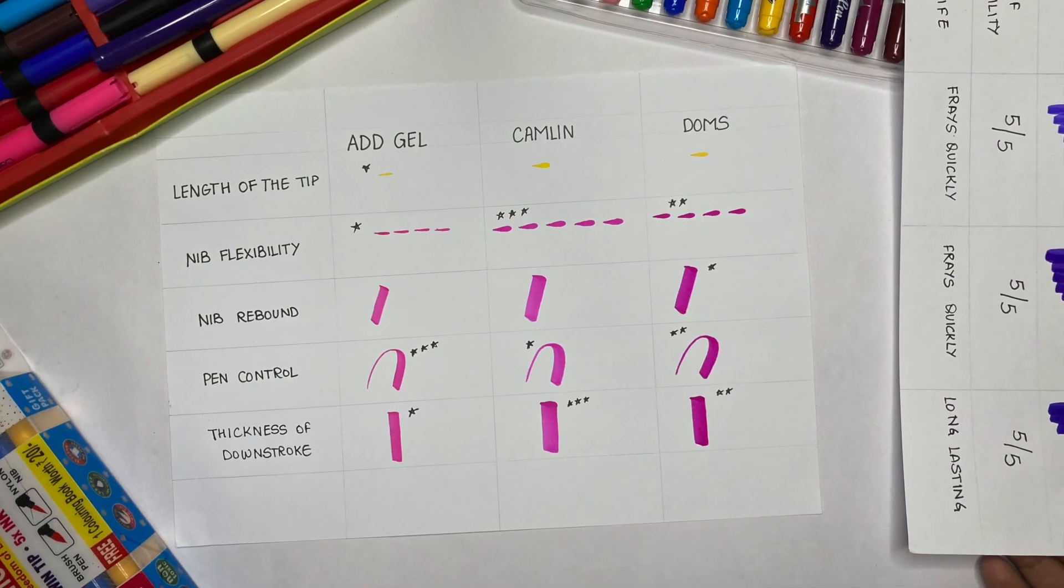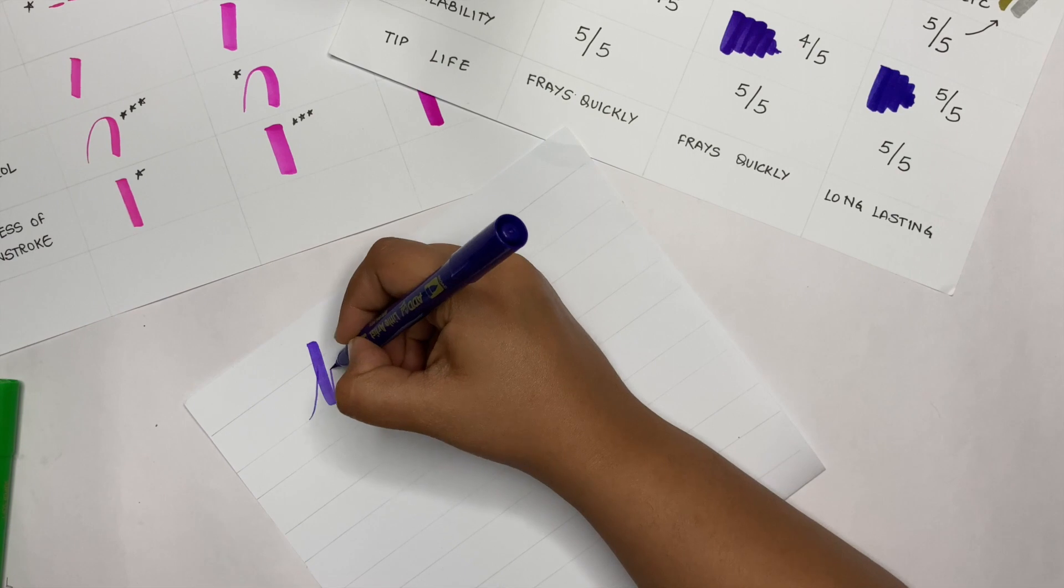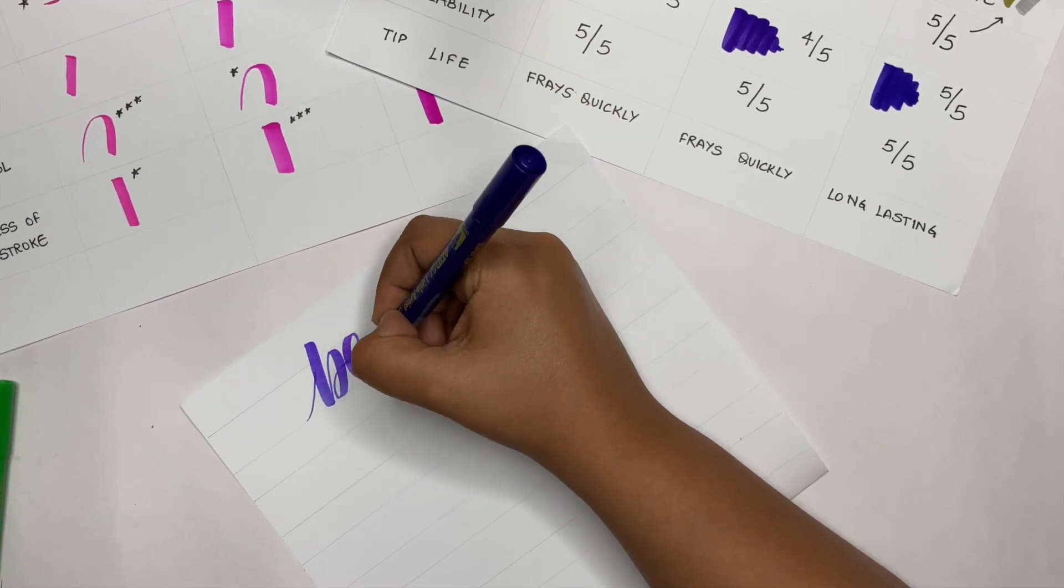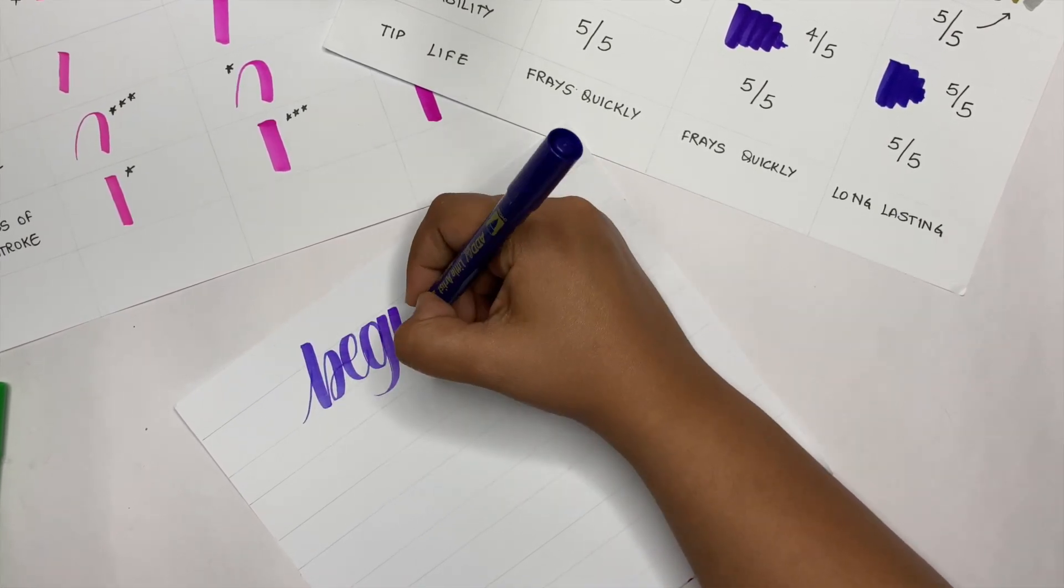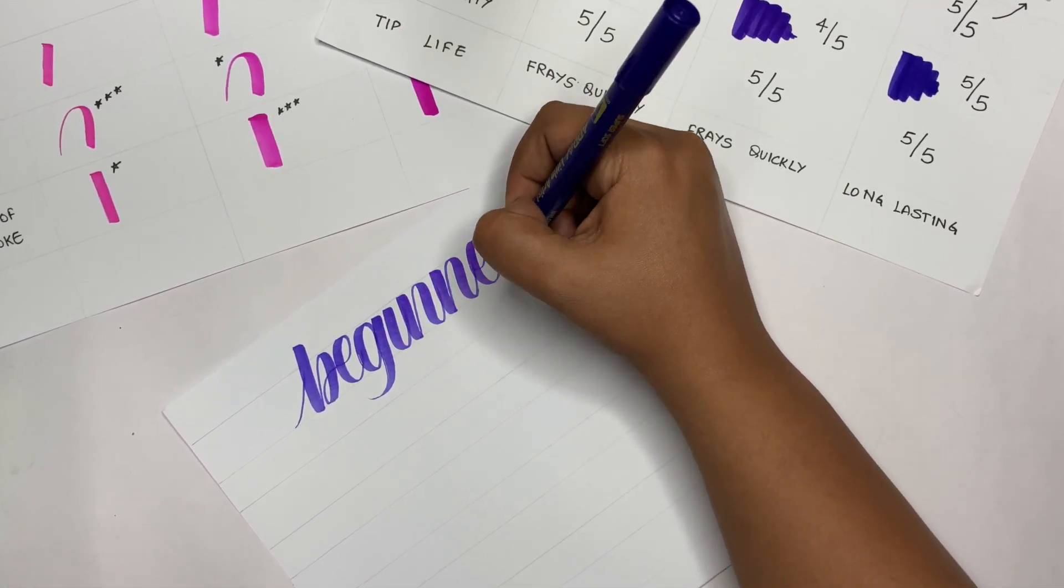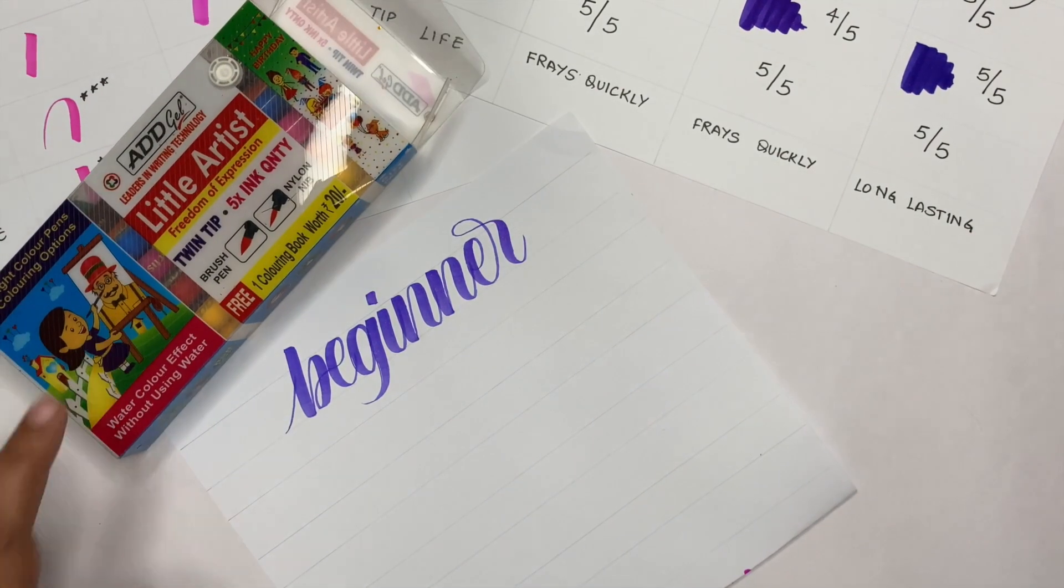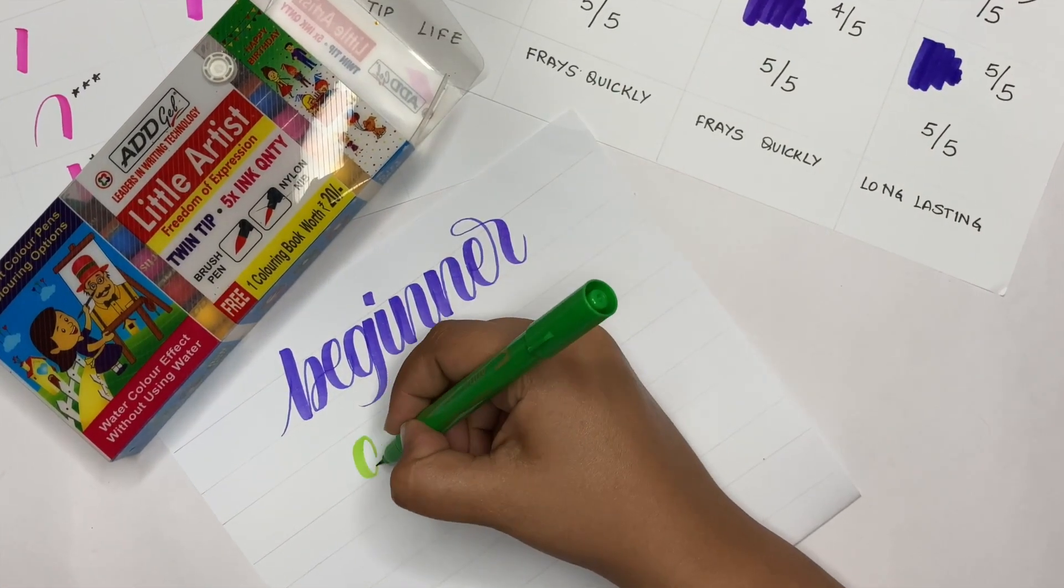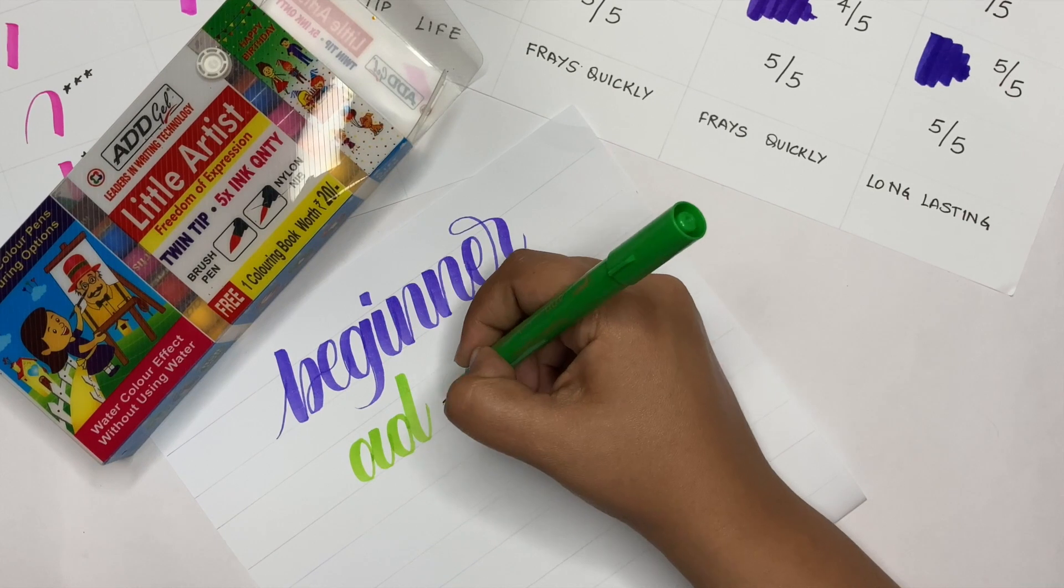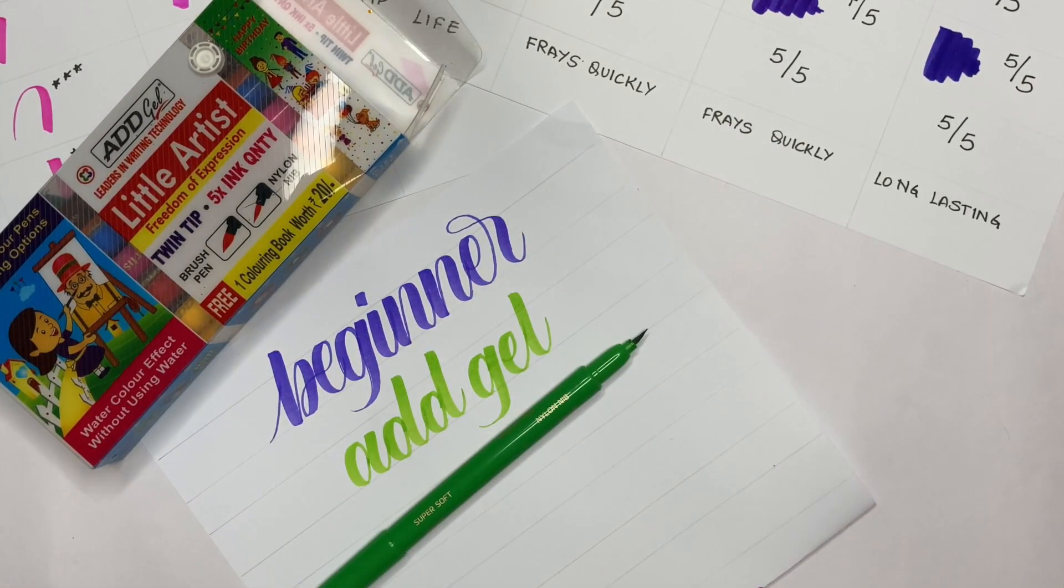ADD Gel, Camlin and DOMS. Yes, that's true. But if you are a beginner and looking to buy a brush pen for the first time, then I will suggest that you go ahead with ADD Gel Little Artist brush pens. That's because they have medium flex nibs, which help beginners develop control over the pen faster. You can also check out my detailed review on ADD Gel brush pens. I will link it in the top right corner.